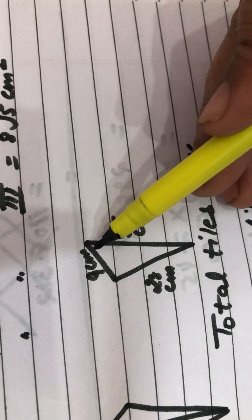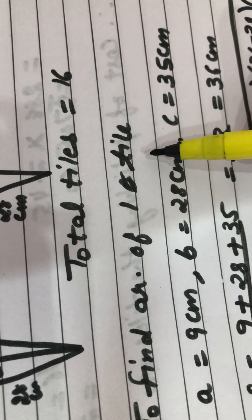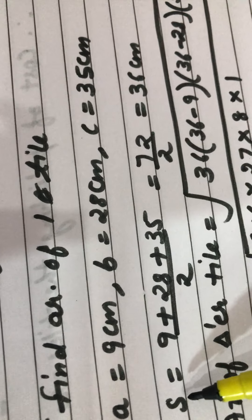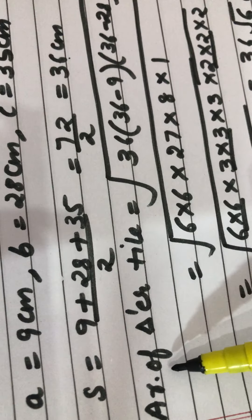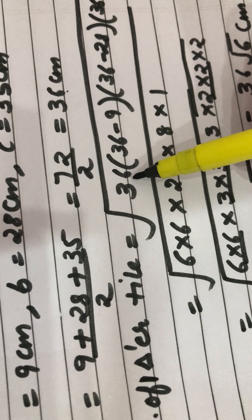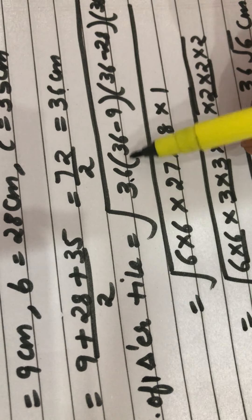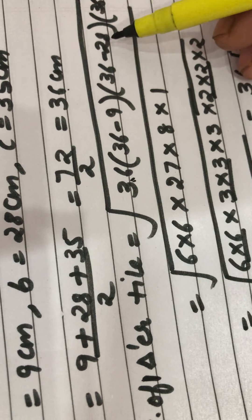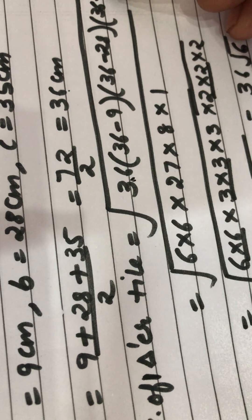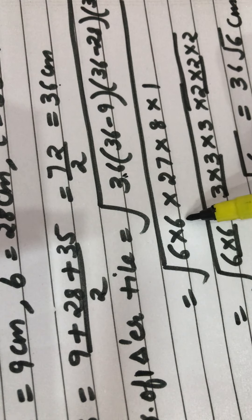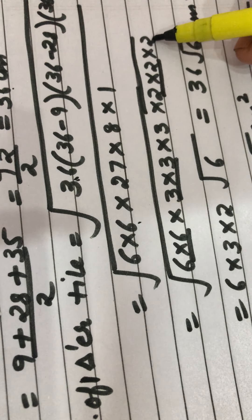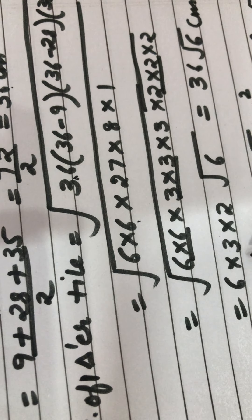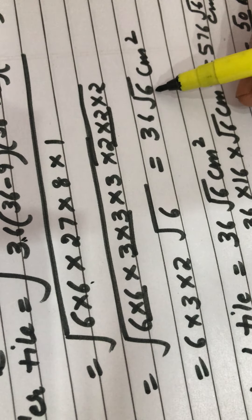The three sides of the triangle are 9 cm, 28 cm, and 35 cm. First we find the area of one tile. a = 9, b = 28, c = 35. Semi-perimeter S = (9 + 28 + 35)/2 = 36 cm. Using Heron's formula: area = √(36 × (36−9) × (36−28) × (36−35)) = √(36 × 27 × 8 × 1). Making factors: 6 × 6 × 3 × 3 × 3 × 2 × 2 × 2. After taking the square root, the area of one tile = 36√6 cm².